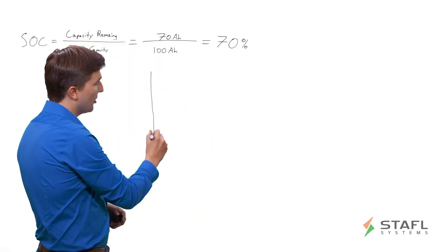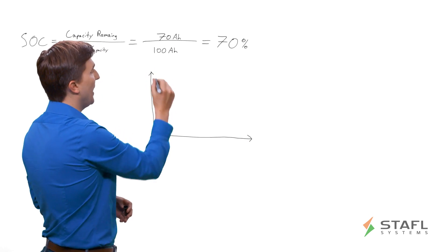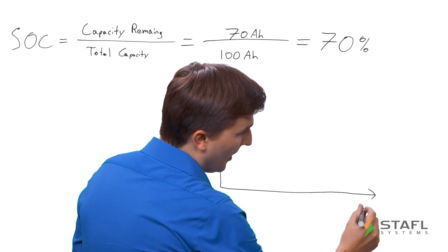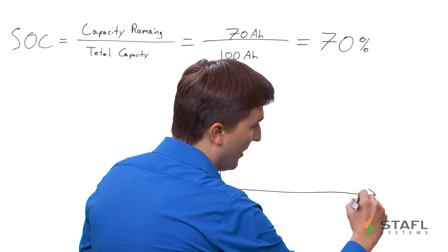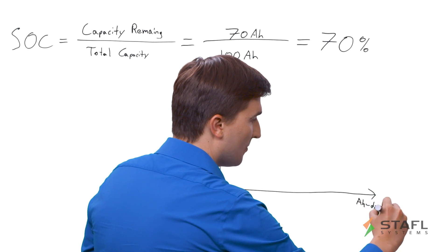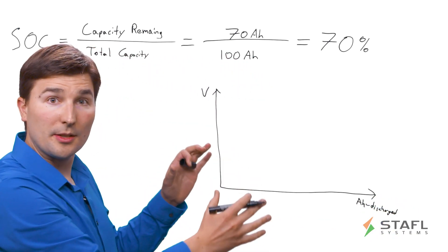And why is that important? Well, if we look at the discharge curve for a lithium ion battery cell, or battery pack, with voltage here on the y-axis, and on the x-axis, we have amp hour discharged.